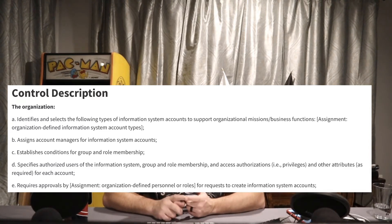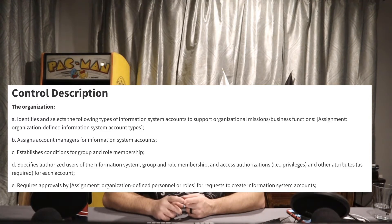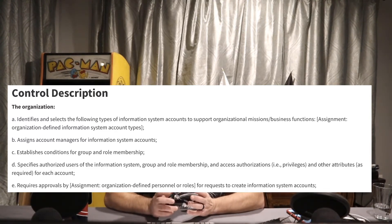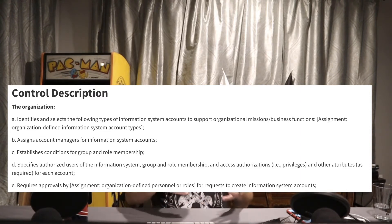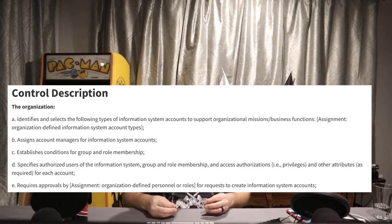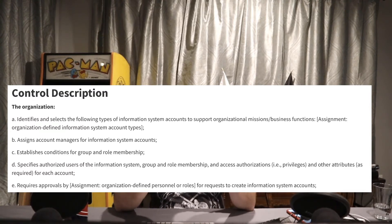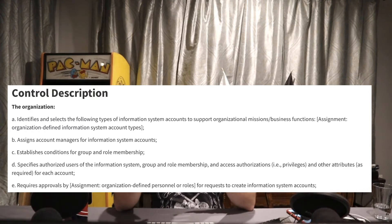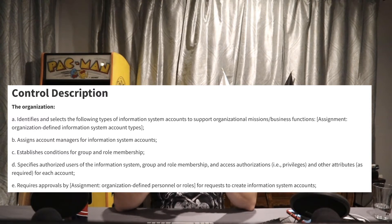Part D: specifies authorized users of the information system, group and role membership, and access authorizations — privileges and attributes as required for each account. For each account we create, we specify which users are actually authorized and take specific action to authorize people to be part of a group or role, defining those attributes as well.